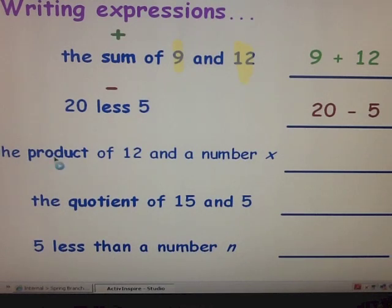The third example is the product of 12 and a number x. What is our clue word? It's product, and product means to multiply. We're multiplying 12, but what is the other number? It's a variable. We're going to multiply 12 times the variable x. Your expression would be 12 times x, or you could write it without the dot as just 12x. That also means multiplication.